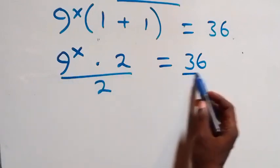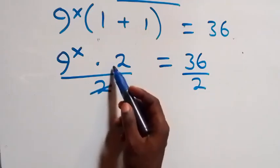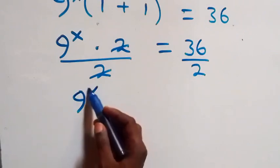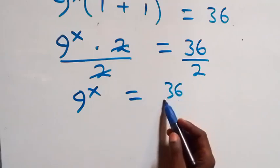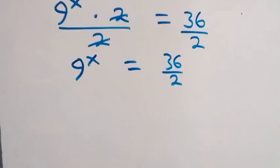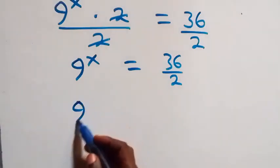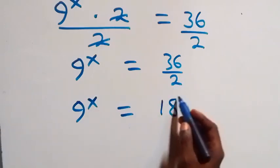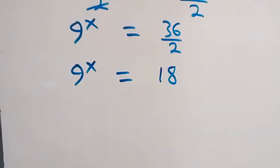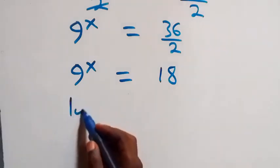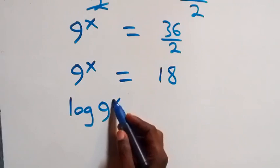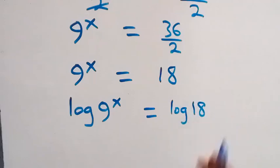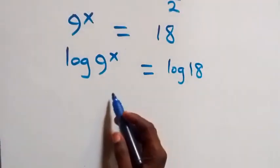The next step: we divide both sides by 2. The two terms cancel each other, and we are left with 9 to the power x equals 36 over 2, which is 18. From here, we take the log on both sides: log of 9 raised to the power x equals log 18.